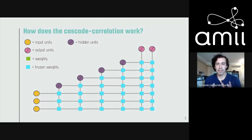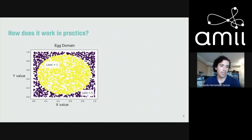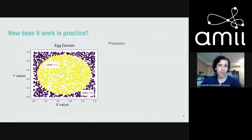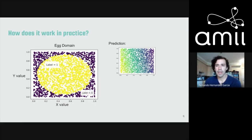Here's a practical example using what I call the egg domain. In this task, data points have an x and y value between zero and one, and the label is determined by position: if they're inside the yellow egg shape they're labeled one, if outside they're labeled zero. We start by training just the output layer, and after it converges we see a prediction that is not very close to the egg shape we want.